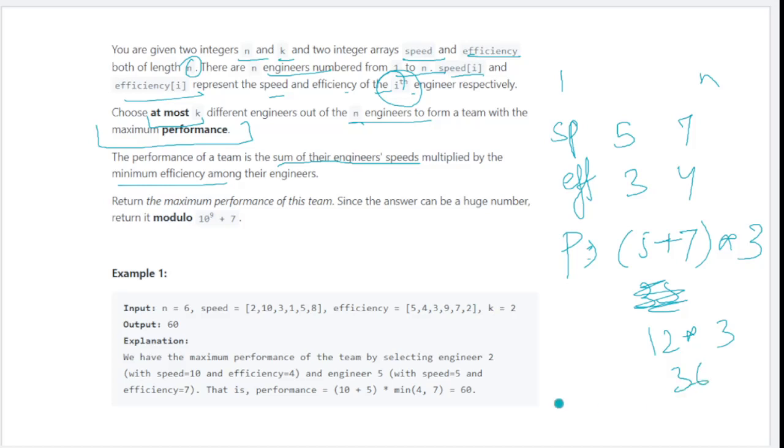One more thing they say: return this as a modulo of 10^9 + 7 because the answer can be a huge number. Keep this in mind. Now let's look at the first given example.